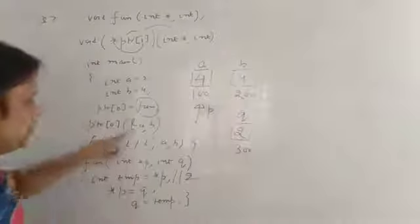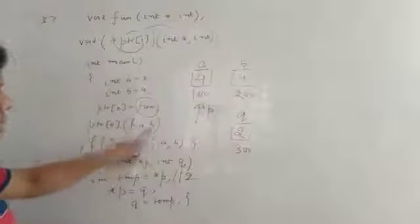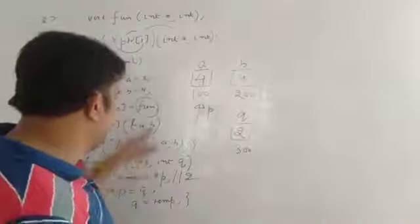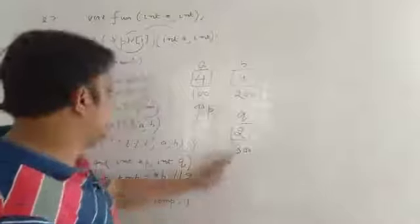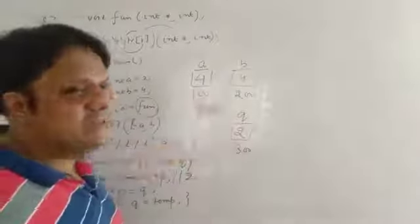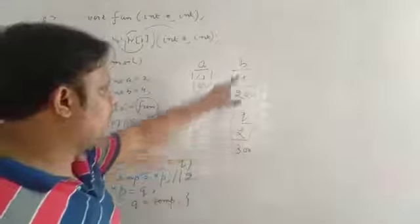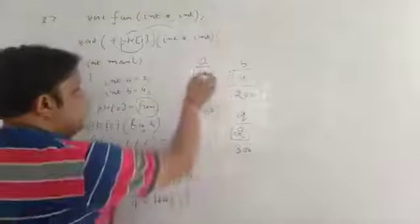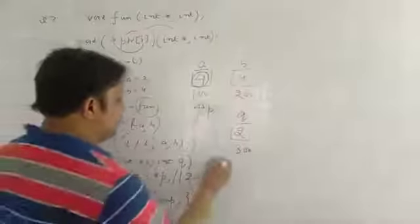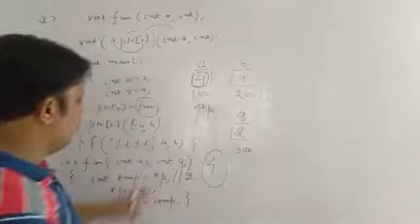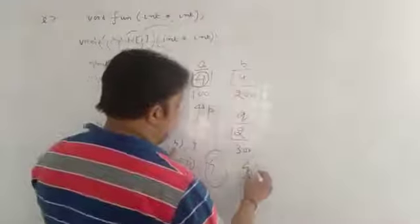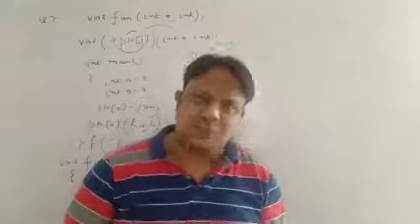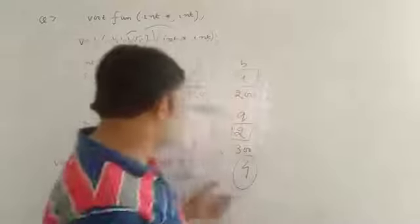q changes to 2, but b doesn't change. Check, this is call by reference. Call by value I tell you a lot. Call by reference, you are changing the actual data, but in call by value, changing copy of data, copy changes but actual data remains same. Copy changes to 2, but actual data is 4. Now when control goes back to main and you print a and b, because we passed it as call by reference, it changes to 4, and b's value is 4 because it's call by value, actual data doesn't change.